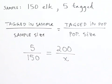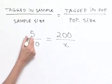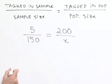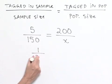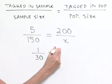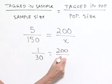We now want to solve this proportion. What we can do is notice that we can simplify our fraction on the left by noting the common factor of five. So we'll have 1 divided by 30 equals 200 divided by x.